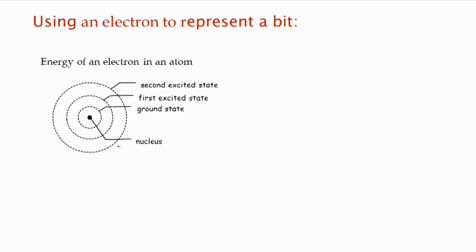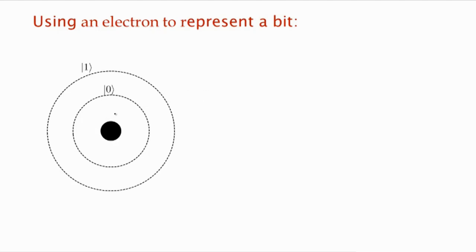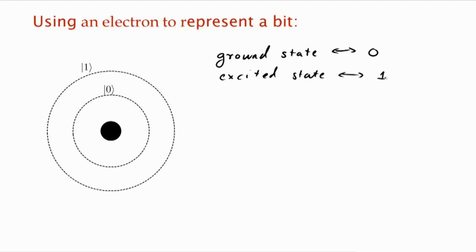So now, if we wanted to represent a bit of information, what we could do is make sure that the energy of this electron is high enough so that it could be in the ground or the first excited state, but not high enough to be in any higher energy state. So we have our hydrogen atom. The electron is allowed to either be in the ground state or in the excited state. We could encode the bit by saying that the ground state encodes for zero and the excited state encodes for one.